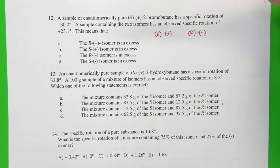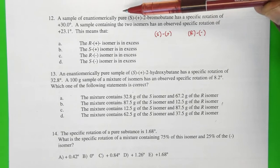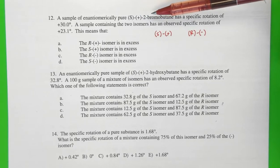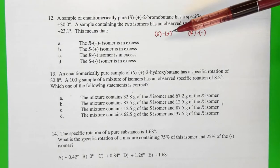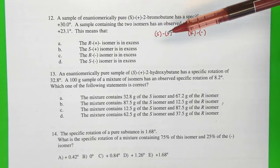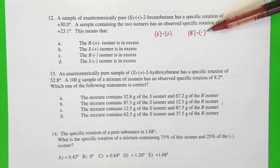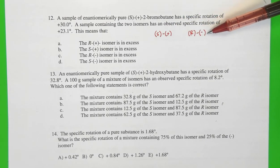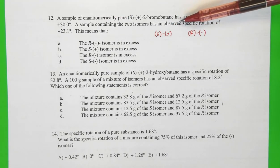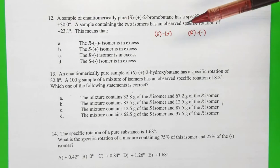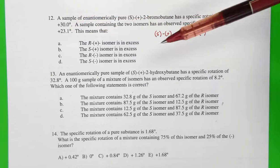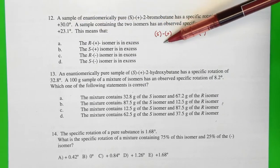We're going to start off by looking at a sample of enantiomerically pure S(+)-2-bromobutane, which has a specific rotation of +30.0 degrees. It's important to note that if this is the S(+) isomer, then the other isomer in the mixture must be the R(-) isomer. If you have a sample containing two isomers with an observed specific rotation of +23.1 degrees, it means you have an enantiomeric excess of the S(+) isomer.